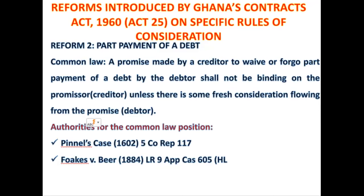So the question that arose in the common law was whether, when a person makes a promise that he is waiving the part payment of the debt — in this case waiving the three thousand dollars — whether a promise to waive or to forgo the part payment of a debt shall be binding against the promisor even though there may be no consideration flowing from the promisee. Under the common law, when you owe me five thousand dollars and I say pay me two thousand and I shall leave the three thousand, that promise is not binding on me — I could always come back and demand the remaining amount.